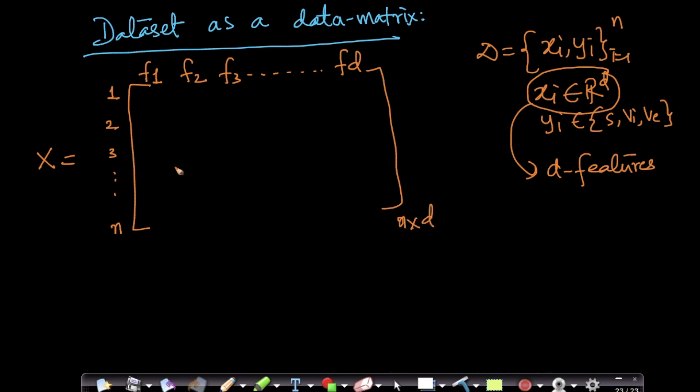Each row here, the ith row here is nothing but your xi transpose. Why did I write a transpose here? Because if I just wrote xi, the default xi is always a column vector. So xi transpose becomes a row vector.